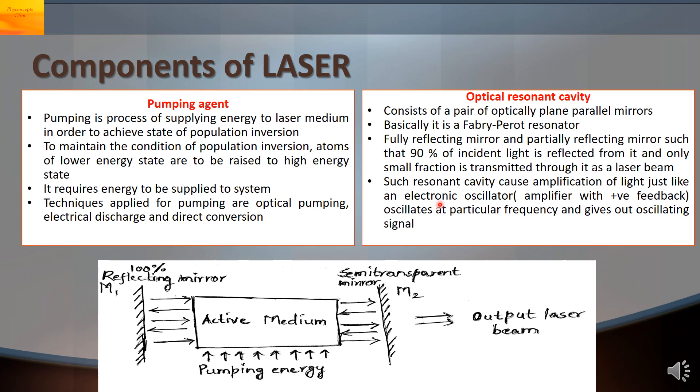The light will be suffering multiple reflection and this actually causes the amplification of light. It is working like an electronic oscillator which is continuously producing oscillating output. The output is continuously oscillating at a particular frequency because of the mechanism of positive feedback.